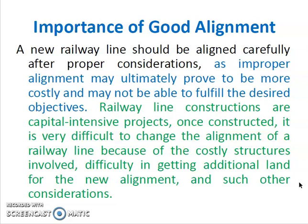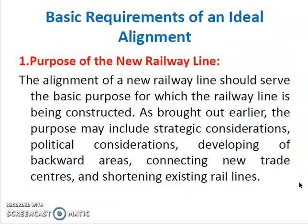Once a railway line is constructed, it is very difficult to alter the alignment because it involves a very huge cost, and getting extra land for the new alignment is also very difficult.